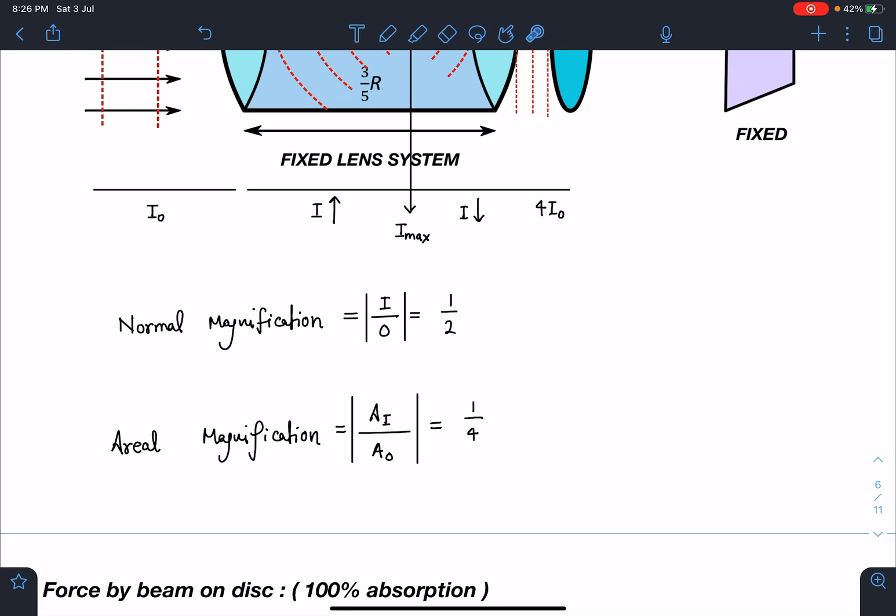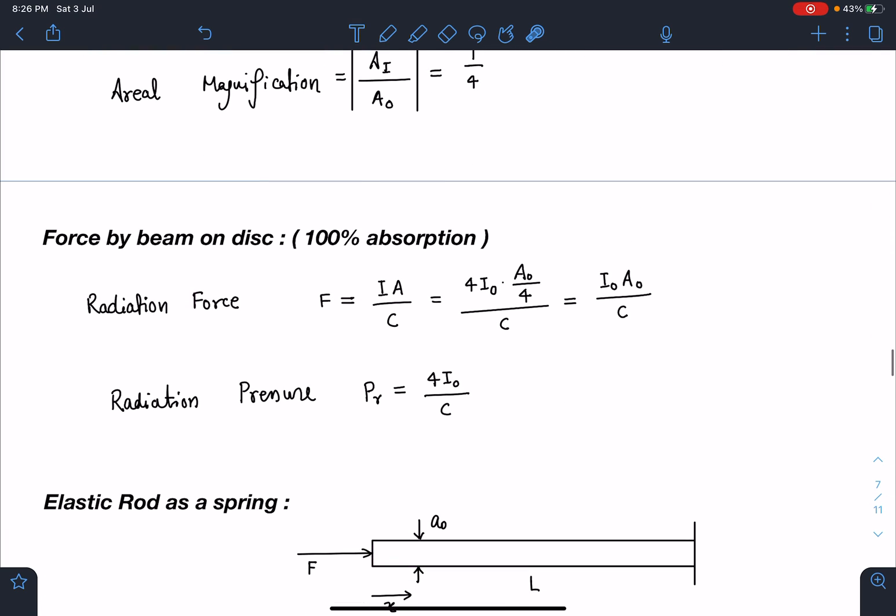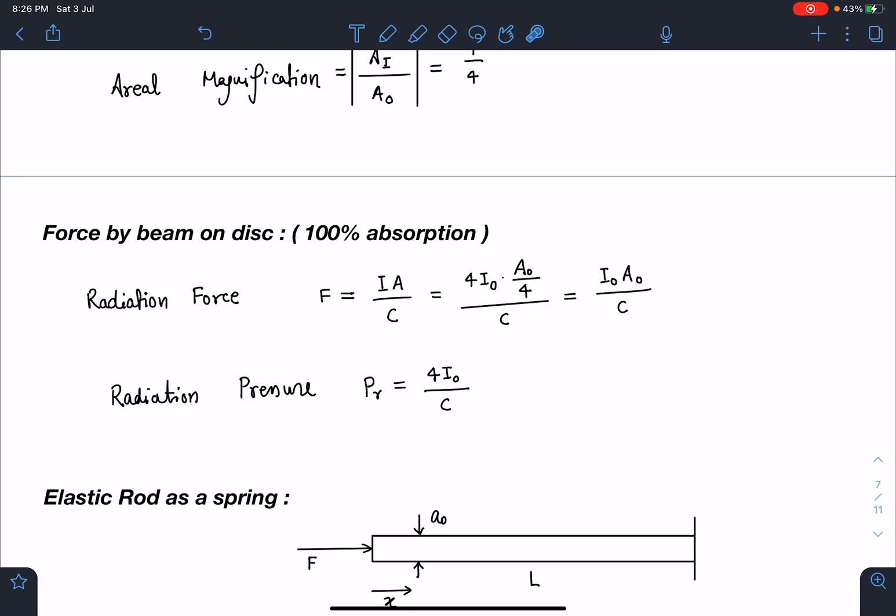I hope till here everything is clear to you. The next part is force by beam on disc. 100% absorption case we are taking, so radiation pressure concept I can apply. I·A/c, so this is I·A/c. You can check intensity has become four times, but area has become one-fourth divided by c. So there is no change at all on force. However, radiation pressure will become four times because of increased intensity.